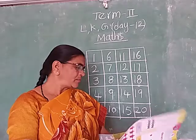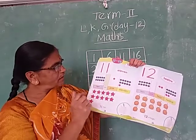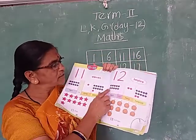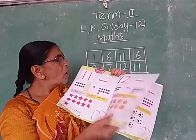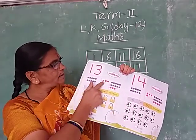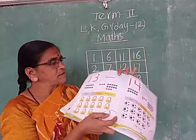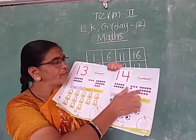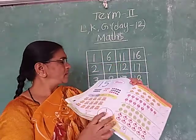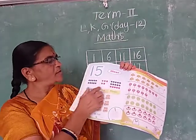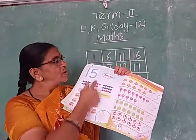Shall I say one more time? 11 to 15. 11: 10 and 1 makes 11, 11 stars. 12: 10 and 2 makes 12, 12 oranges. 13: 10 and 3 makes 13, 13 locks. Next number 14: 10 and 4 makes 14, 14 balls. 15: 10 and 5 makes 15, 15 bags.